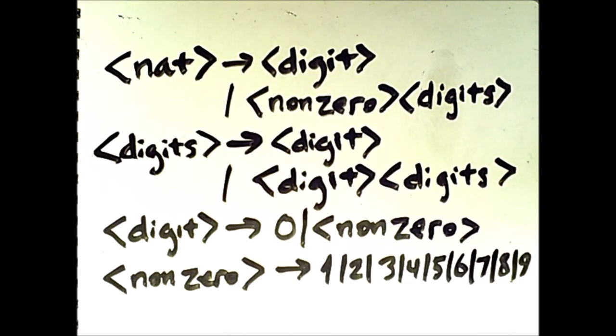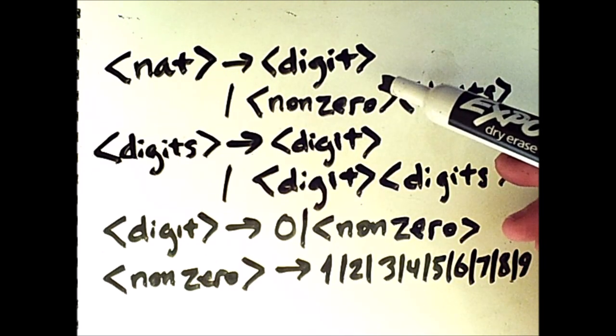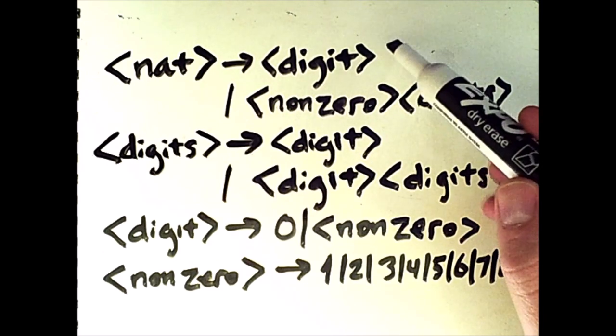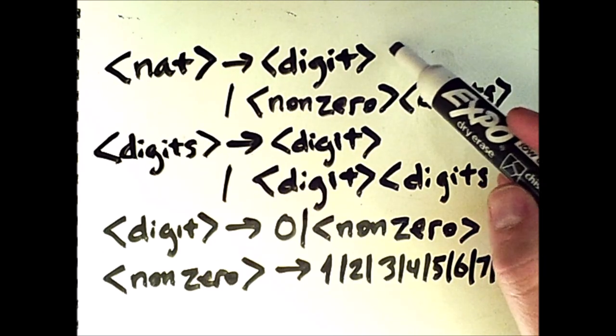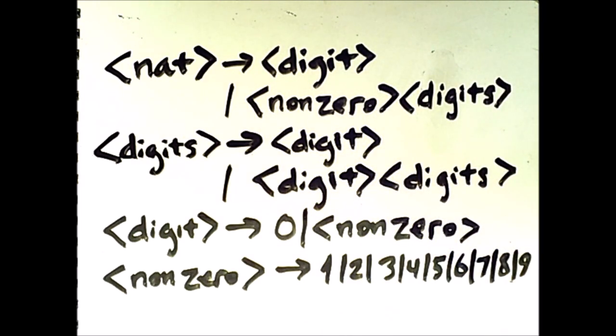So this grammar allows us to generate any non-negative integer, also known as a natural number. The trick is that we will start with a digit or a non-zero. So if we have a digit, that is the only one we have. That one could be a standalone 0 or any of the values from 1 to 9.